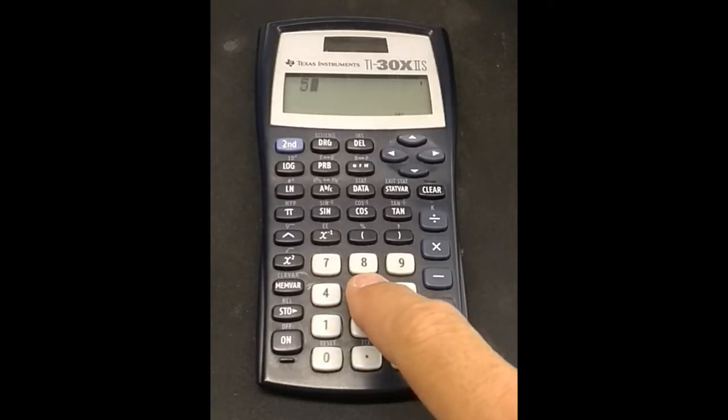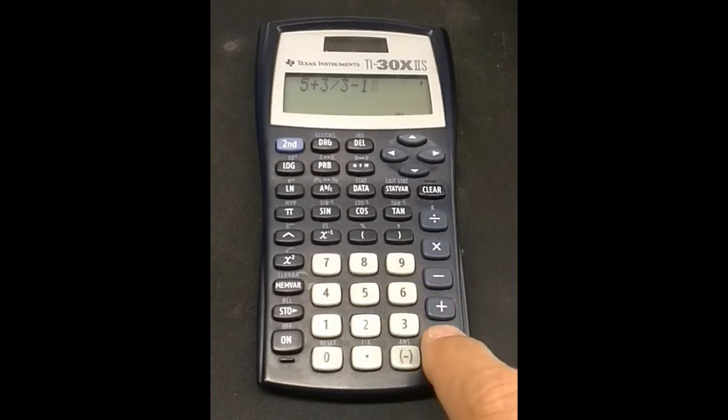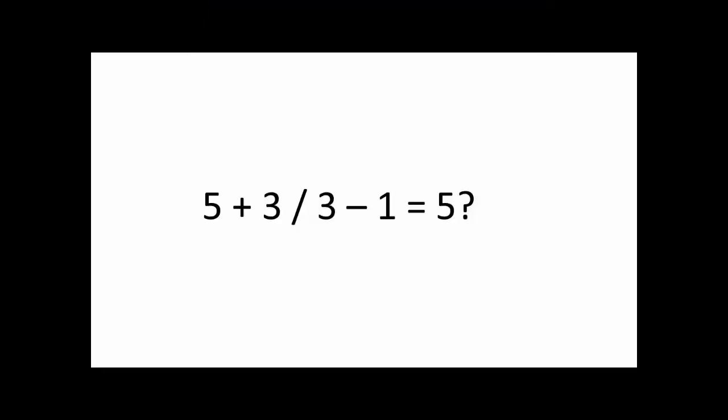Here's a division problem. 5 plus 3 divided by 3 minus 1. When we evaluate by hand, we would calculate the numerator and denominator separately. That's 8 divided by 2. And then we do the division to get the answer, 4. What happens when we try entering this in the calculator? 5 plus 3 divided by 3 minus 1 equals 5?